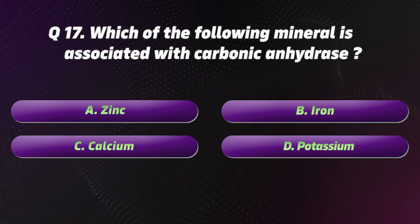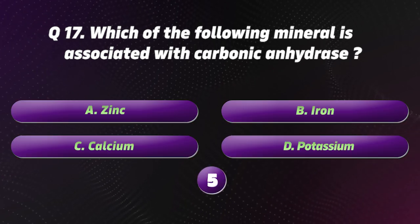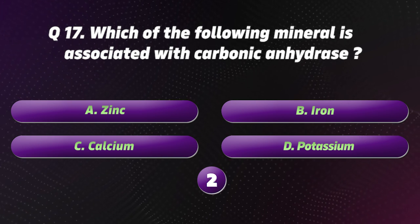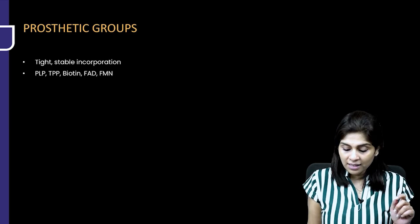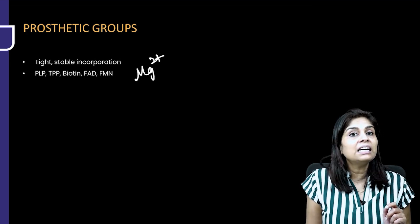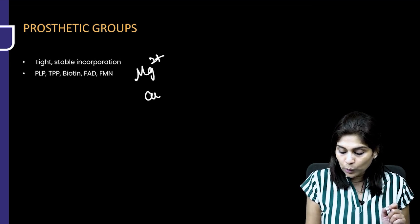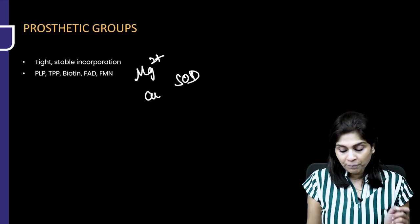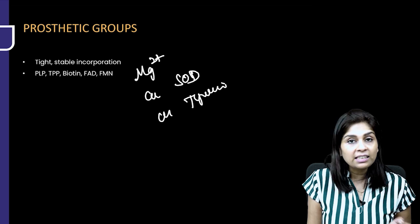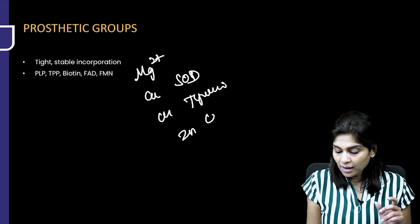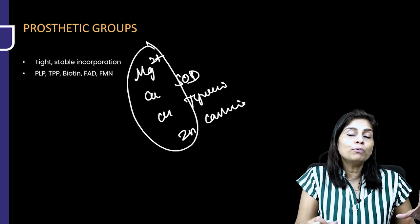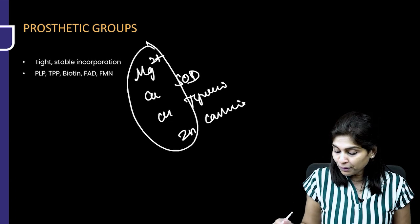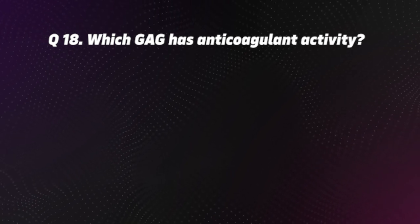Question 17. Which mineral is associated with carbonic anhydrase? Options: A. Zinc, B. Iron, C. Calcium, D. Potassium. The correct option is A, Zinc. Zinc is present in carbonic anhydrase as a prosthetic group. Other examples: magnesium in kinases, copper in superoxide dismutase and tyrosinase. These mineral non-protein parts cannot be detached from the protein.